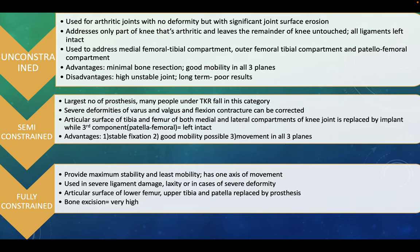Fully constrained prosthesis provides maximum stability and least mobility, with only one axis of movement. It is used in severe ligament damage, laxity, or cases of severe deformity. The articular surfaces of the lower femur, upper tibia, and patella are all replaced by a prosthesis, and bone excision is very high.